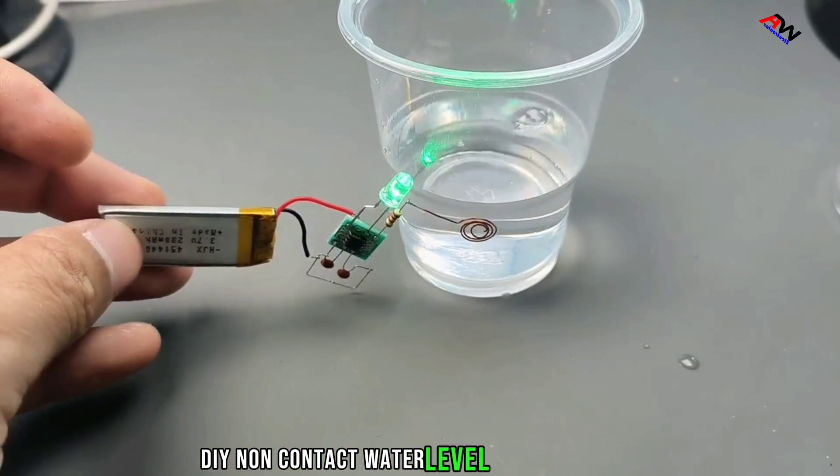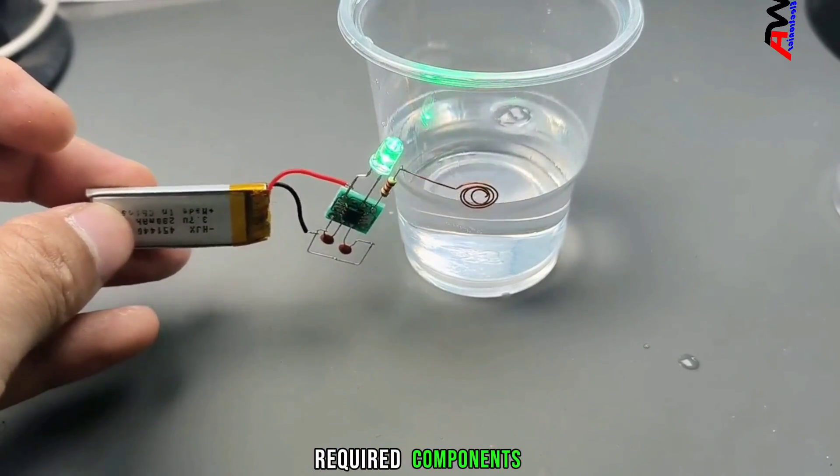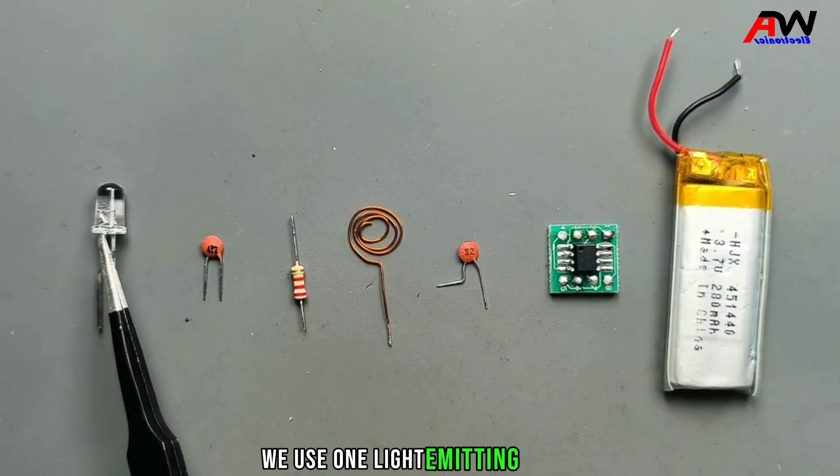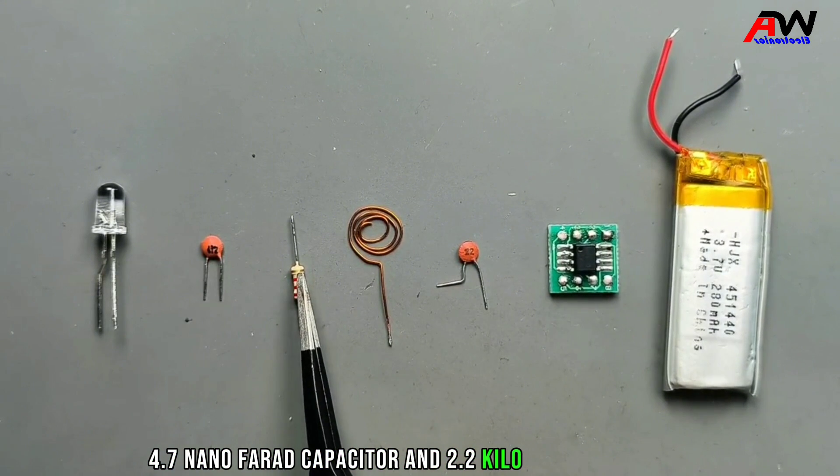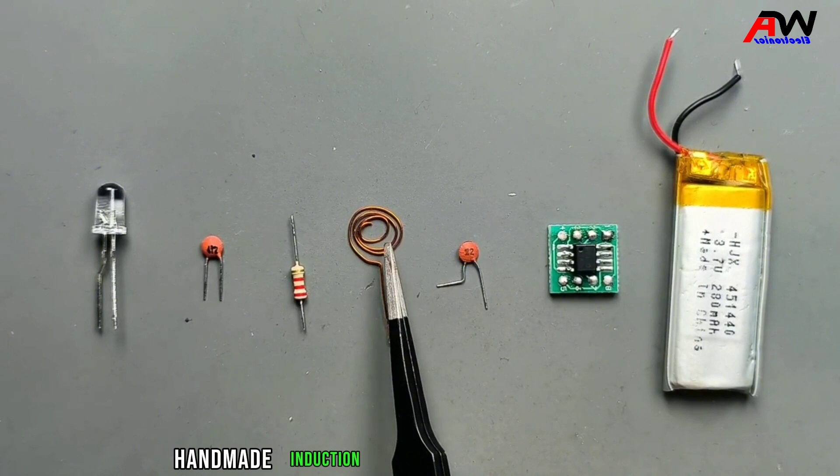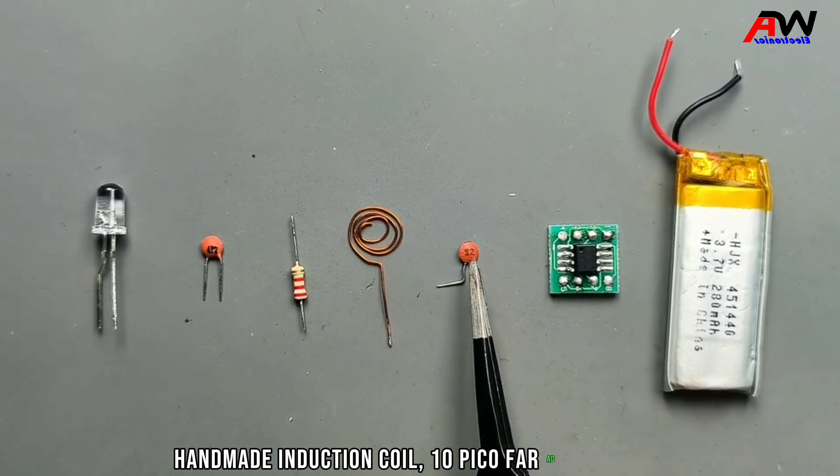DIY non-contact water level sensor project required components. We use one light emitting diode, 4.7 nanofarad capacitor, 2.2 kilohm resistance, handmade induction coil, and 10 picofarad capacitor.